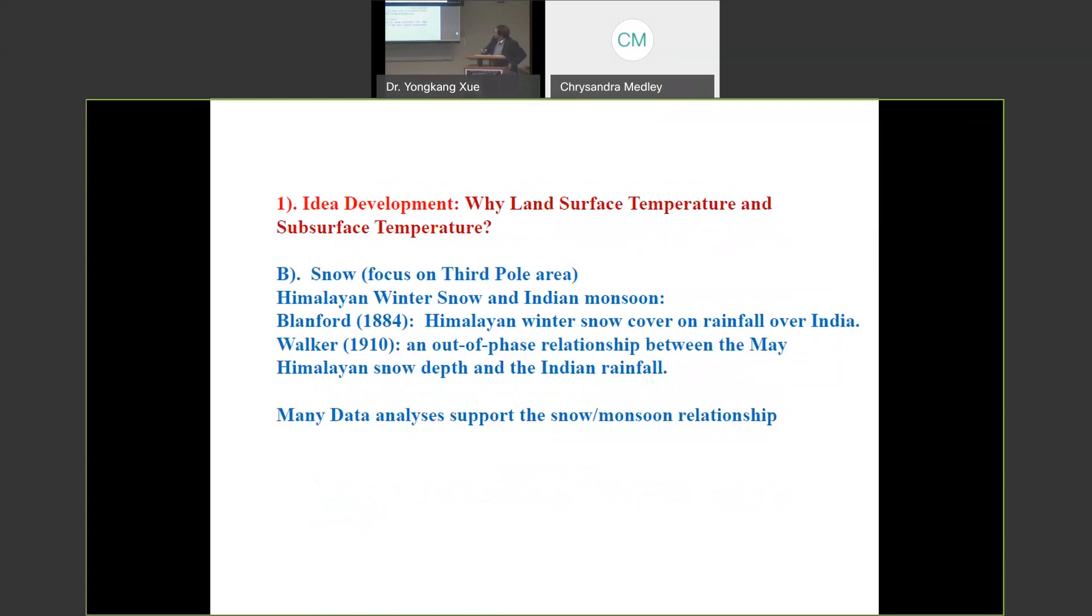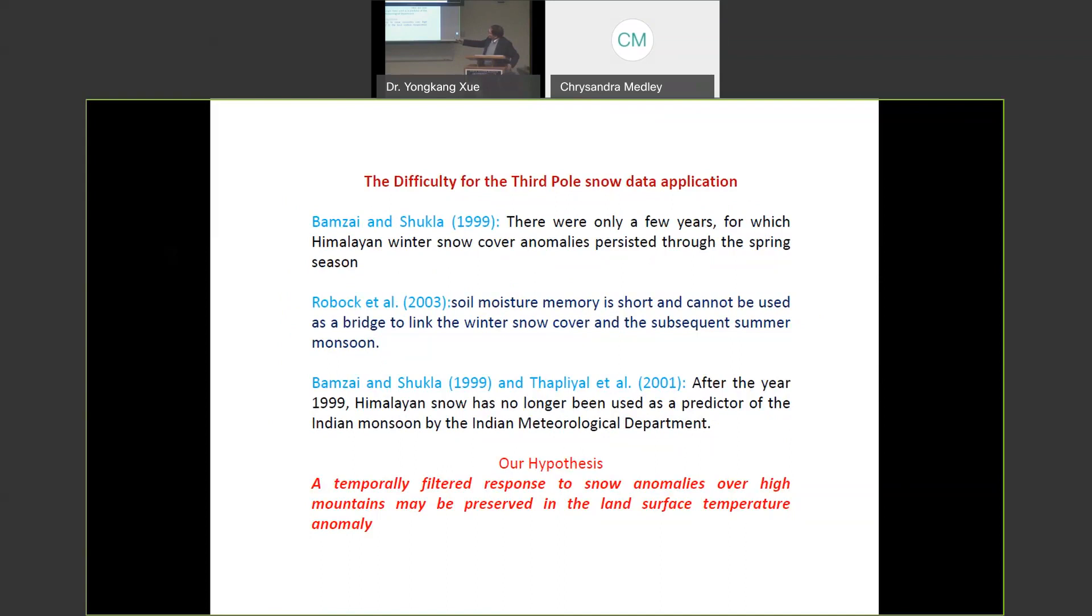In 1910, Walker proposed out-of-phase relationship between main Himalaya and India monsoon. So the data analysis following up continued to support this relationship. However, there was a difficulty because so far, Ramsey and Shukla point out, there were only a few years for which Himalaya winter snow cover normally persistent to the spring. So Aaron Roberts, he was a faculty in the University of Maryland before, he shows that soil moisture memory is short, and it cannot be used as a bridge to link the winter snow cover and the subsequent summer monsoon. And in fact, after about a century use in the India meteorology department using snow as a long term predictor for India monsoon, after year 1999, Himalaya snow has no longer been used as a predictor.